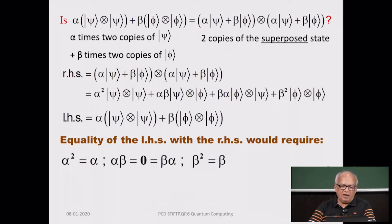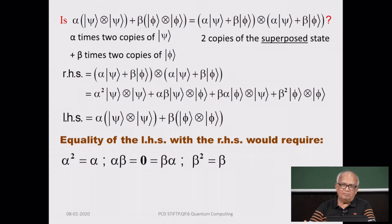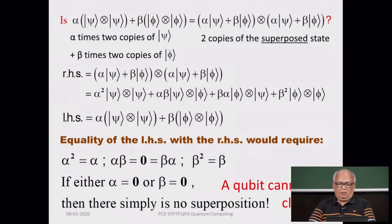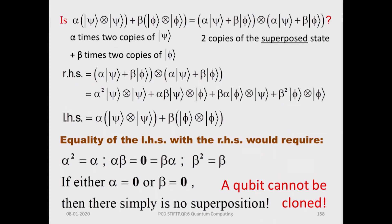These conditions are satisfied only if alpha is 0 or beta is 0 or both are 0. But if either alpha or beta is 0, the superposition is destroyed — there is no superposition to talk about, since the superposition is made of alpha*psi + beta*phi. This means that a qubit cannot be cloned. This is the no-cloning theorem, and we have seen that the proof is based on very simple considerations in quantum mechanics. A quantum copier does not exist — not only does it not exist, it cannot exist.